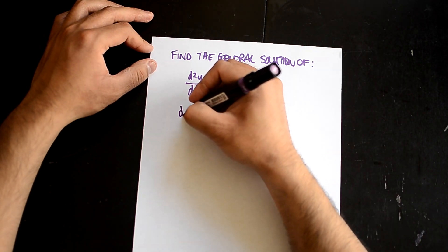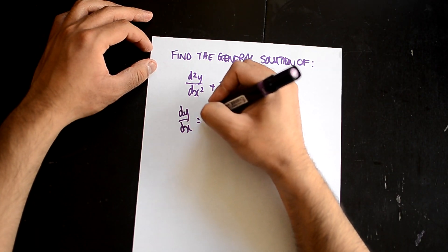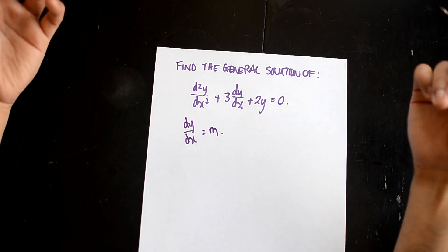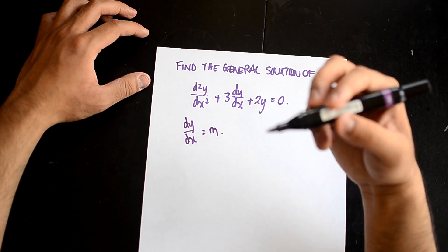You substitute dy/dx to equal m. You can make up anything - p, g, d, use Greek, it doesn't really matter. Just substitute with anything.